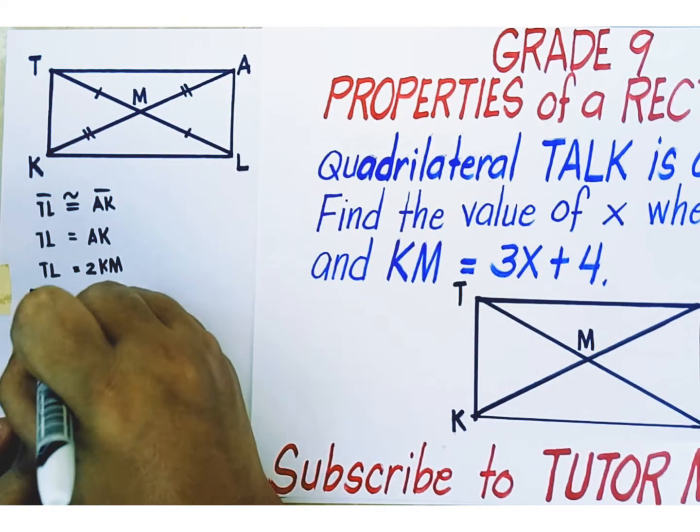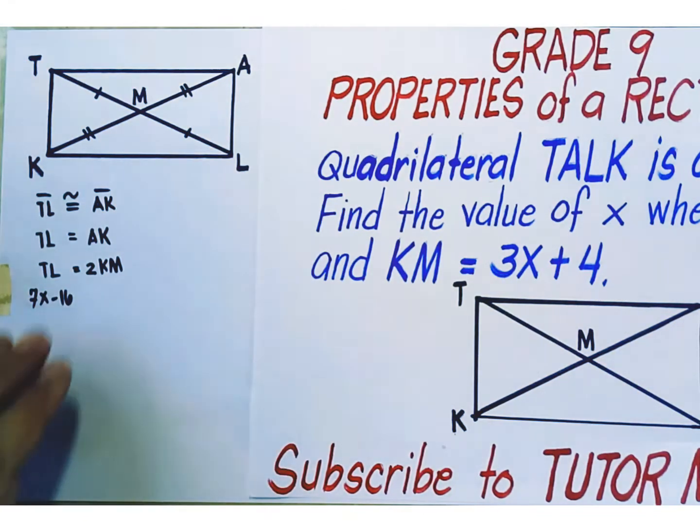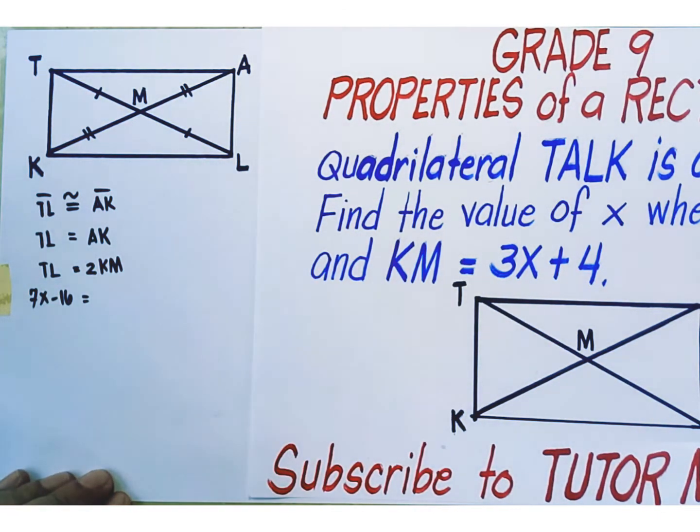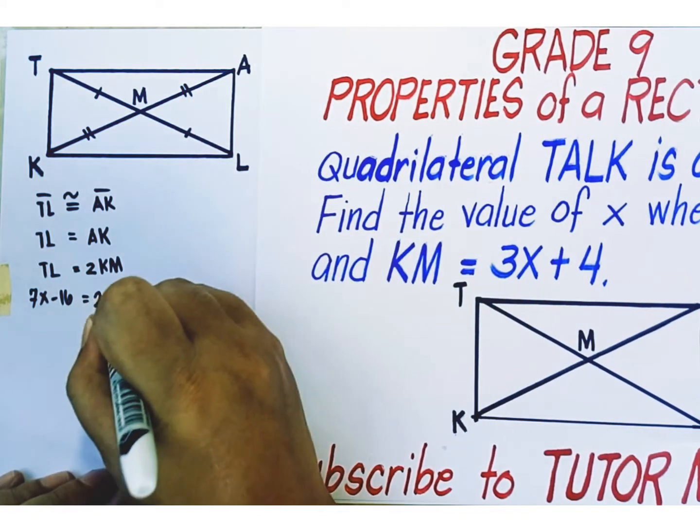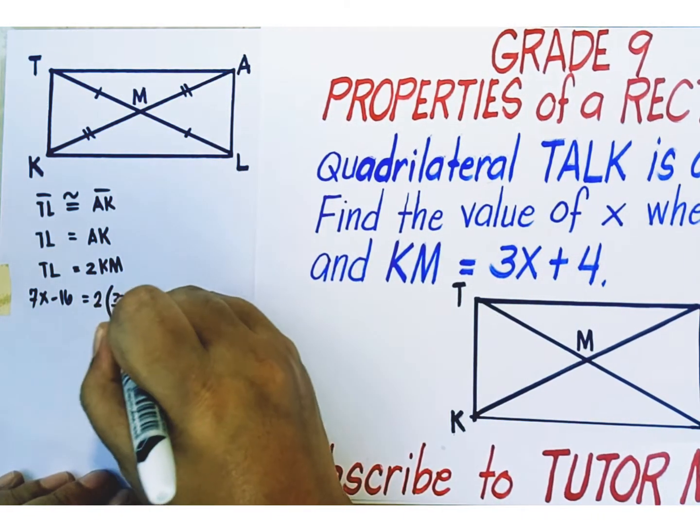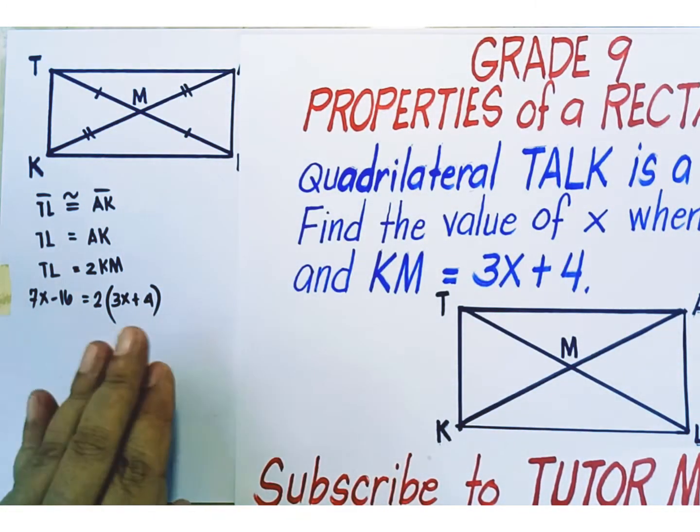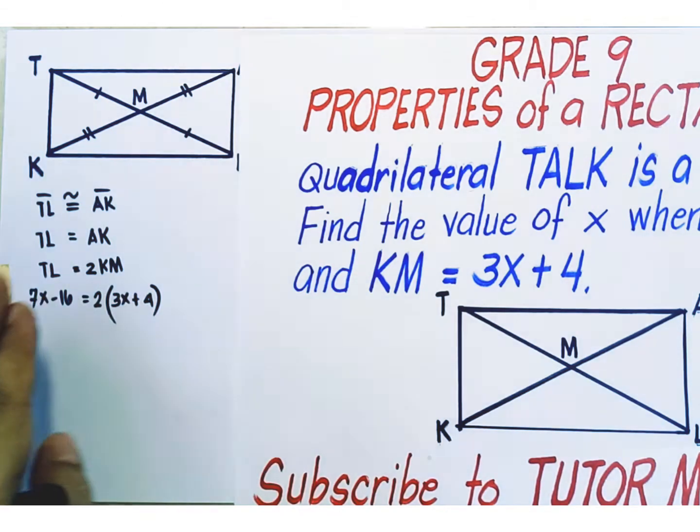Left side becomes 7x minus 16. Right side becomes 2 times 3x plus 4. So, this is our working equation in solving for x.